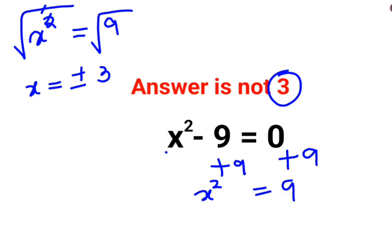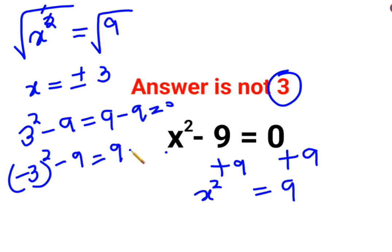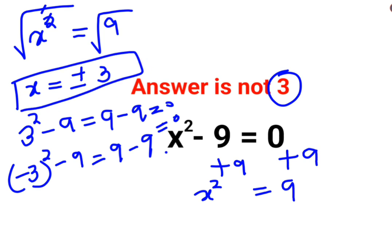Let's verify. For 3 squared minus 9, that is 9 minus 9, which gives you 0. What about negative 3 squared? The square of a negative number is always positive, so 9 minus 9 again gives you 0. So the value of x in this question is supposed to be plus or minus 3.